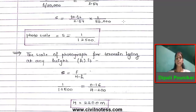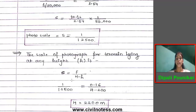After putting in the values, we get the photo scale: s = 1/12,500. The scale of a photograph for terrain lying at any height h is s = f / (H − h), where small h is the elevation from mean sea level to the section line. We know the photo scale, focal length, and elevation, so we calculate the flying height H. Putting in the values, we get H = 2,200 metres above mean sea level.